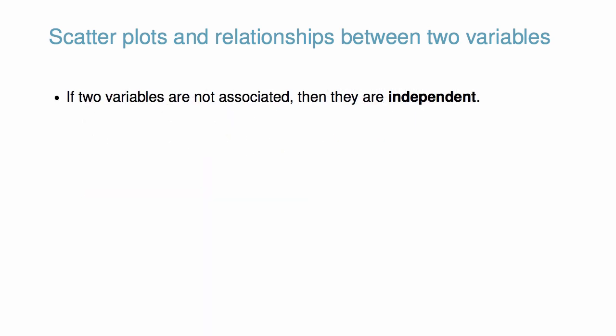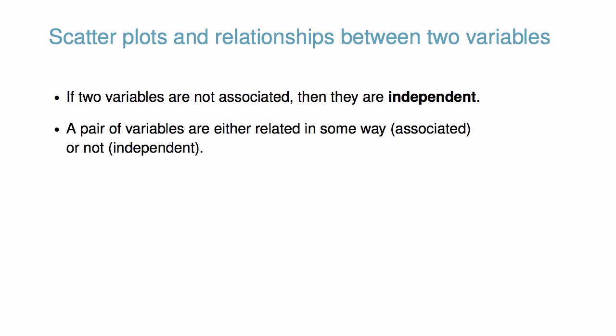If two variables are not associated, then they are said to be independent. That is, two variables are independent if there is no evident relationship between the two. Notice, a pair of variables are either related in some way — we call this associated — or not, which we call independent.